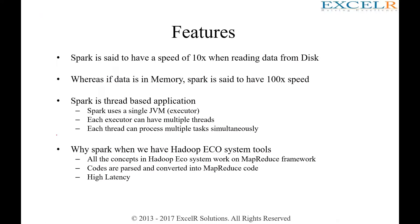Spark is set to have a speed of 10x when reading data from disk, whereas the same speed increases to 100 times when you are doing an iterative job. In machine learning, you have a lot of data and you are training your model, so the data is being called iteratively. The first time Spark calls the data, it sits on disk — it has to first load it into memory and then execution happens, which is where the 10x applies. It is faster, but still slow compared to execution that happens in memory.